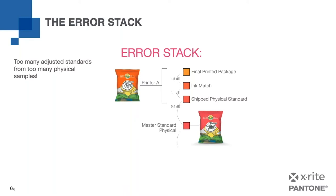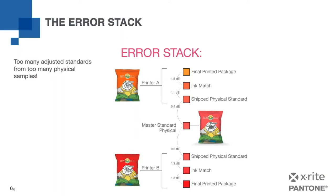There's a concept known as the error stack — the result of adding all sources of error in the process. Starting with a master physical standard that we've printed and everybody agreed on for our new chip bag, we've made reproductions and shipped these to different suppliers. The supplier at the top has a physical standard about 0.4 delta E from the original — still pretty close. But the ink room produces the ink and gets to a little over 1 delta E, and everybody says that's fine. The ink goes out to the press room, and the press operators run to that new standard, staying within 1.5 delta E of it.